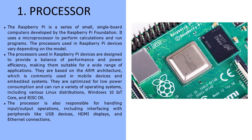The processor used in Raspberry Pi devices varies depending on the model. These processors are designed to provide a balance of performance and power efficiency, making them suitable for a wide range of applications. They are based on ARM architecture, which is commonly used in mobile devices and embedded systems, and are optimized for low power consumption. They can run a variety of operating systems including various Linux distributions, Windows 10 IoT Core, and RISC OS.